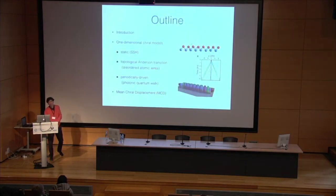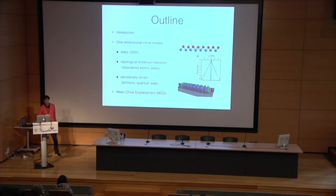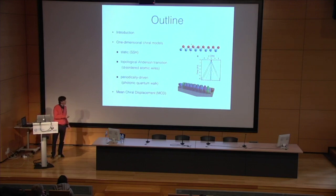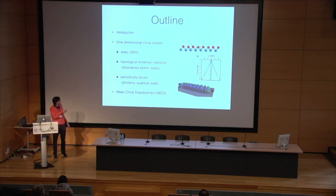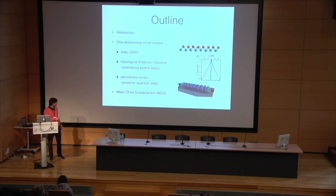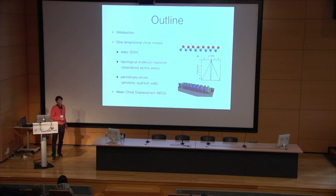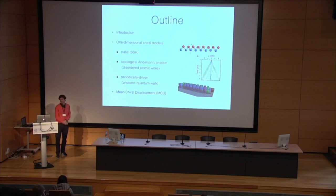Here's a brief outline of the talk. After some introductory slides, I will switch to one-dimensional chiral models, focusing in particular on static SSH models — Su, Schrieffer, and Heeger. Then I'll give an introduction to what we recently observed: a so-called topological Anderson transition in disordered atomic wires. And then, if I have time, I'll switch to a periodically-driven system, a photonic quantum walk. To analyze these systems, I will tell you about an observable we introduced called the mean chiral displacement, which is a very efficient way of characterizing one-dimensional chiral models.